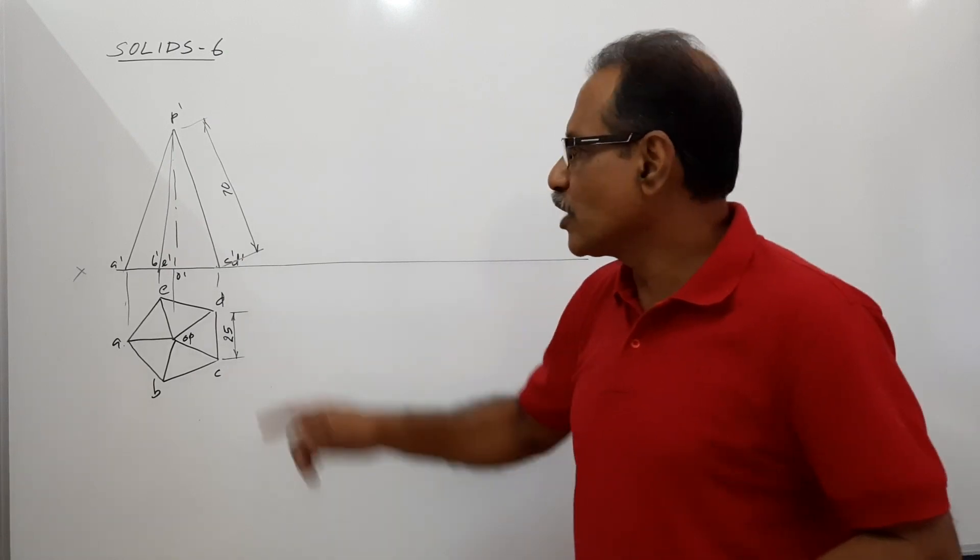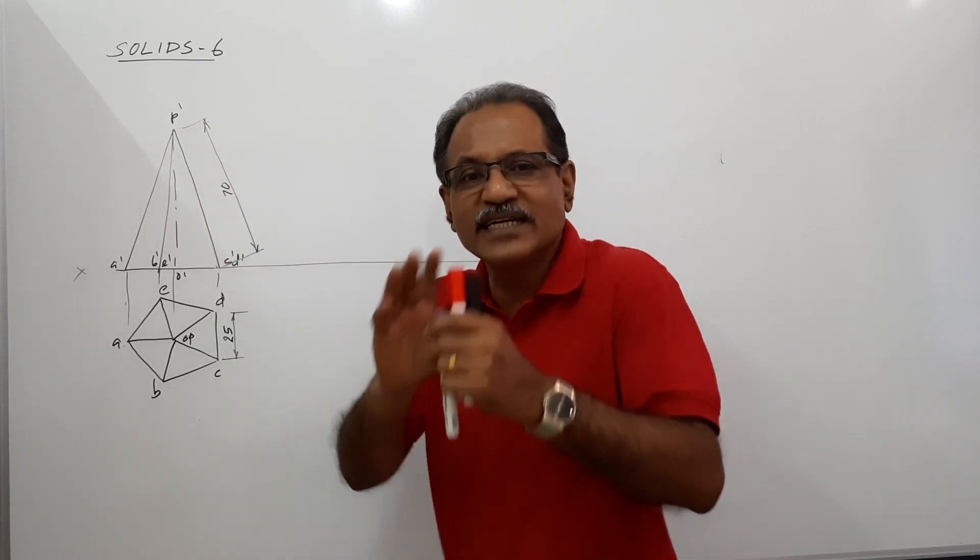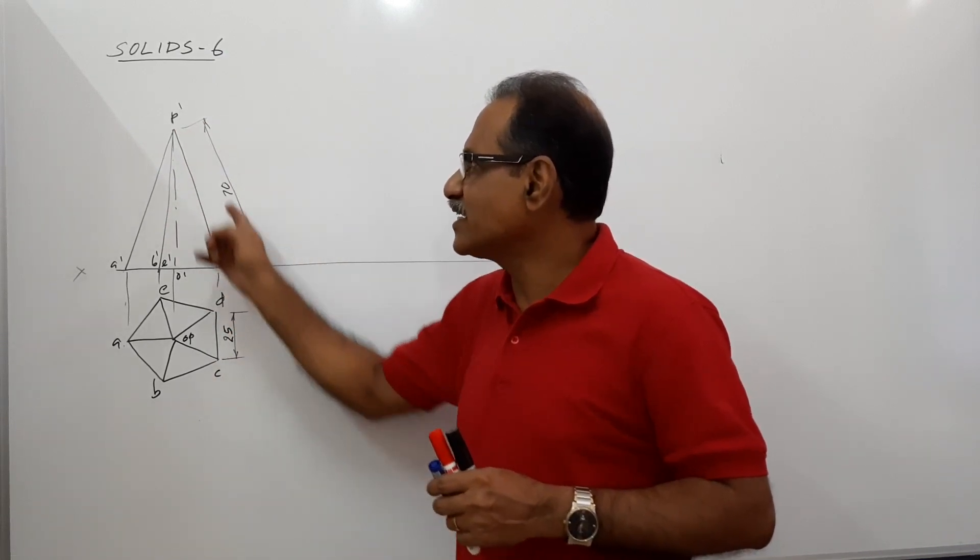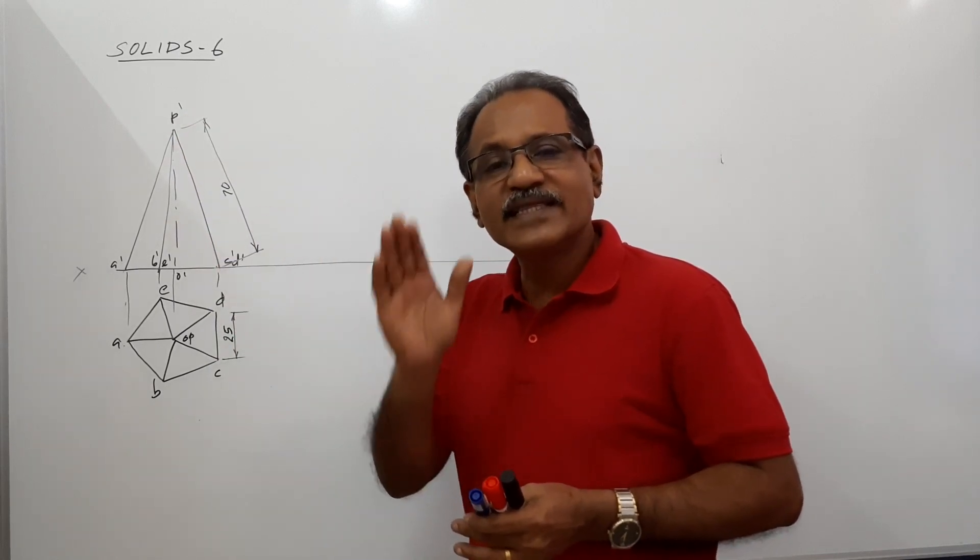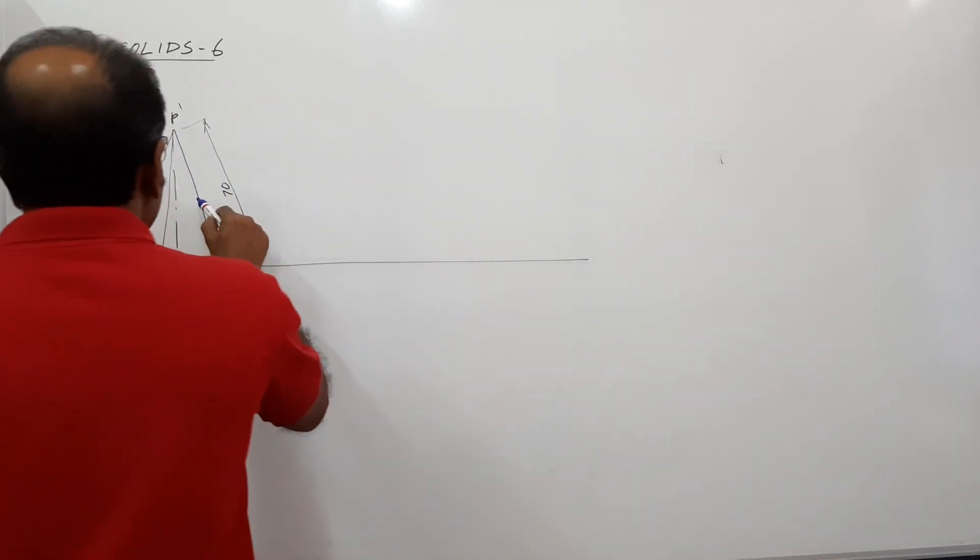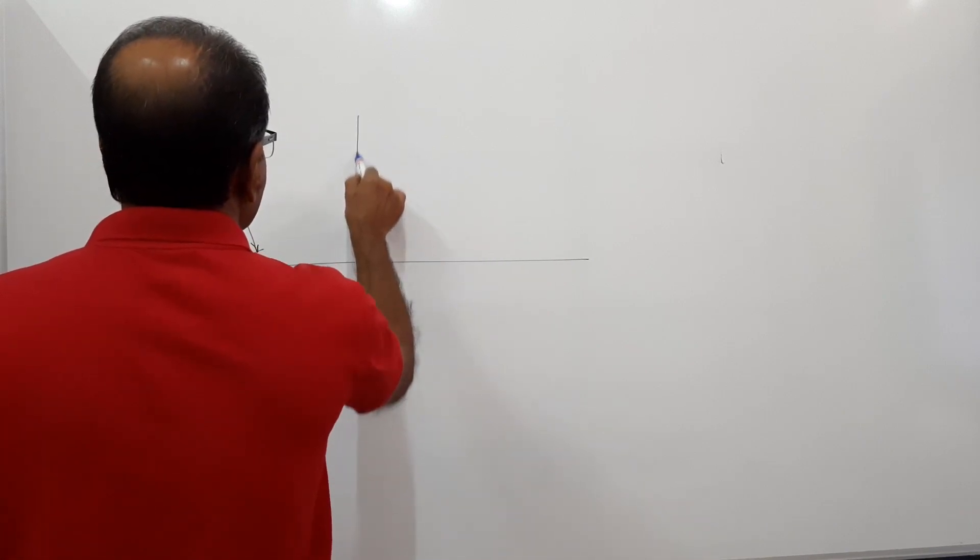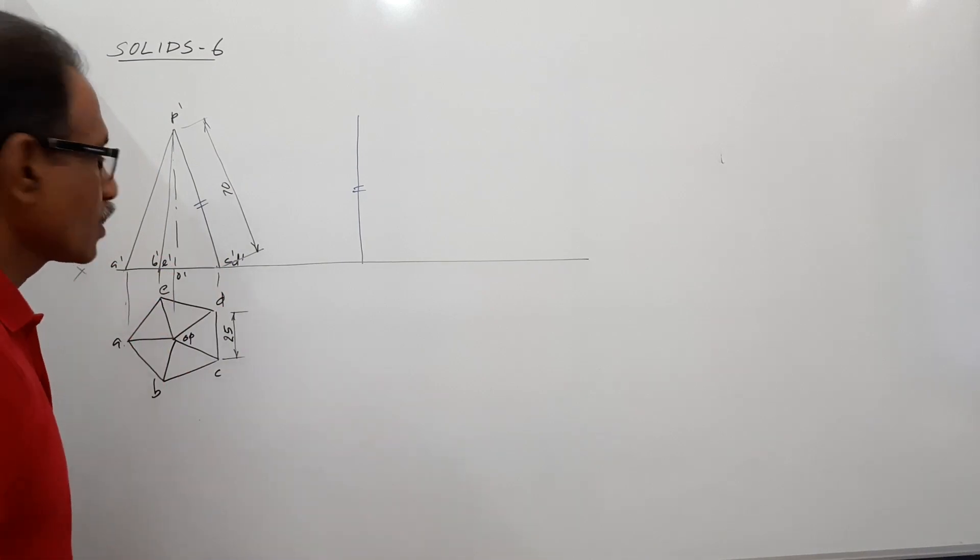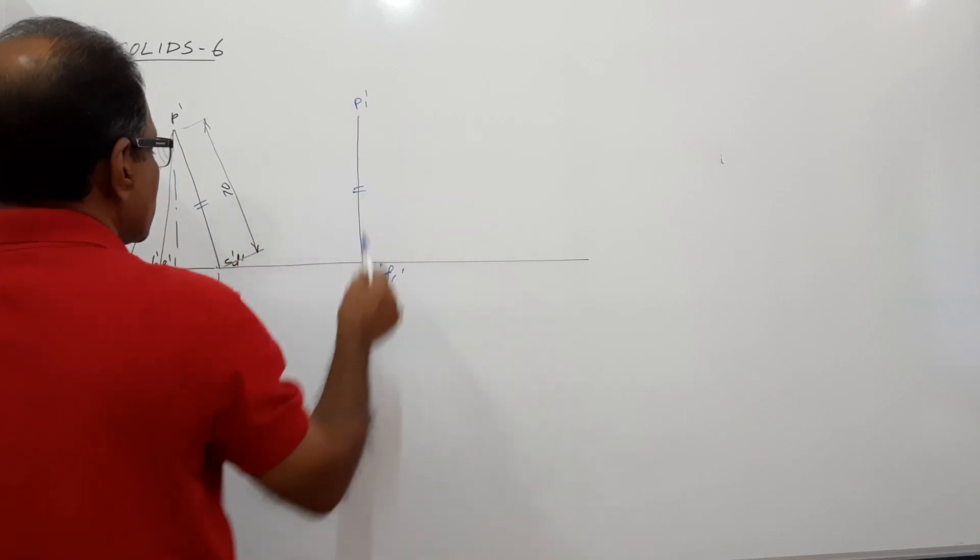Now, what you have to do? You have to redraw this elevation such that C dash D dash P dash. What is it? It is a triangular face which is seen as a line. That has to be in profile plane. That means, take this distance and draw a vertical line. What is this? This is C1 dash D1 dash and this is P1 dash.